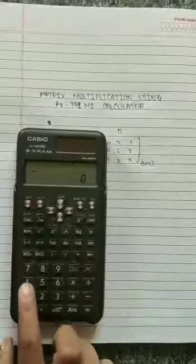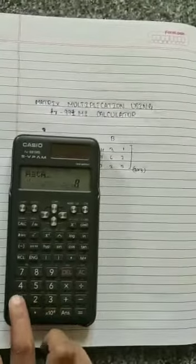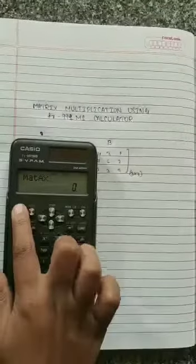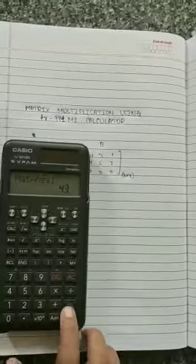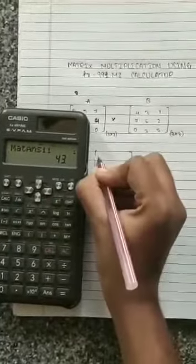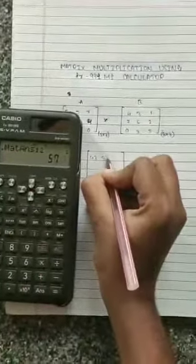Do again: shift 4, math 1, into shift 4, math 2, equals. We get the answer 43, 57, 47.